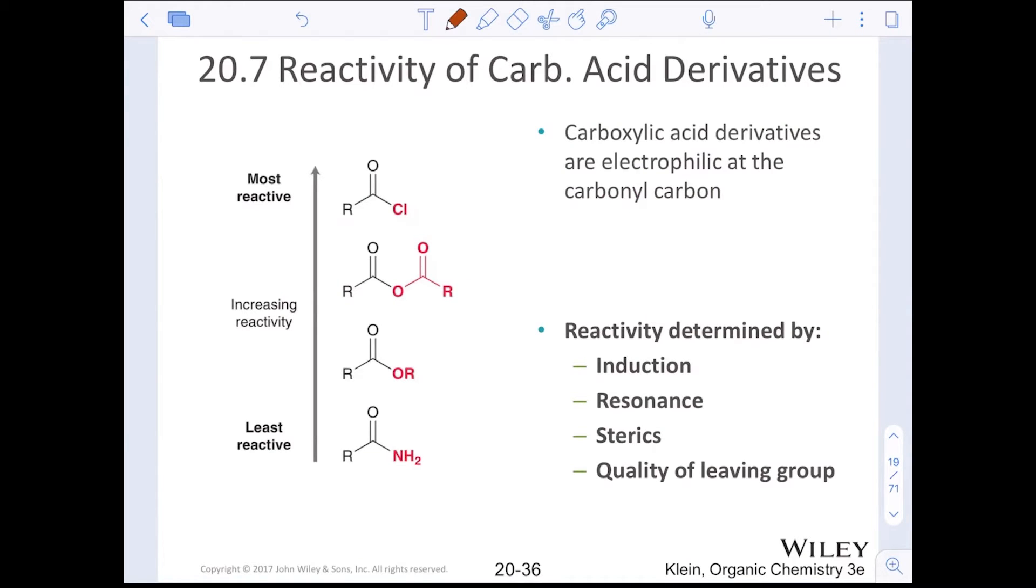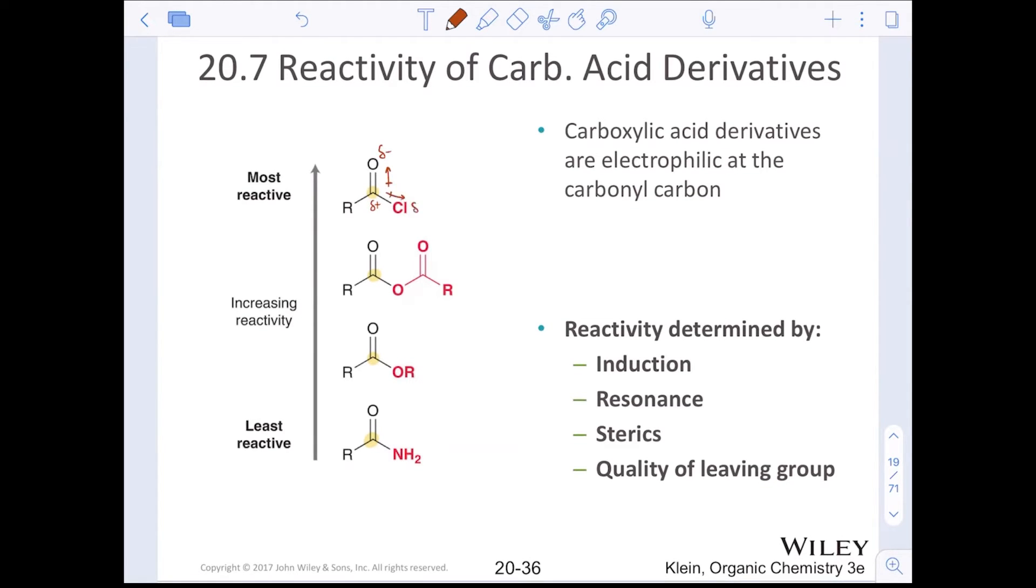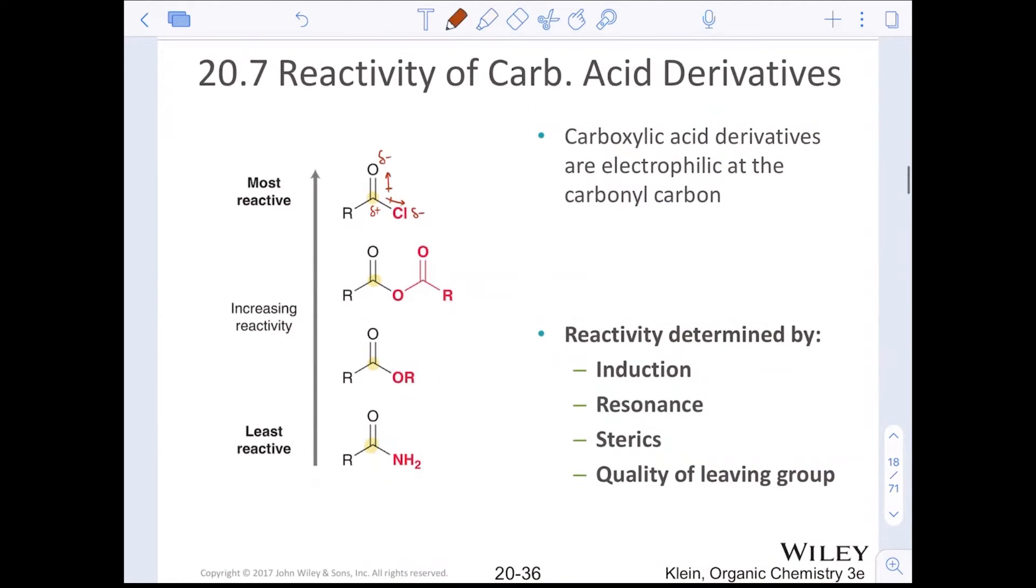Moving on to reactivity. When we think about carboxylic acid derivatives, they are electrophilic at the same exact carbon of the carbonyl because of the polarity. This is also a polar bond. We're seeing induction and polarity at two different positions attached to the carbon electrophile. Reactivity on this list is determined by induction, resonance, sterics, and quality of the leaving group. Leaving groups here are highlighted in red. We're going to start with the acyl chlorides and see all the reactions those can do, then acid anhydrides, then esters, then amides.